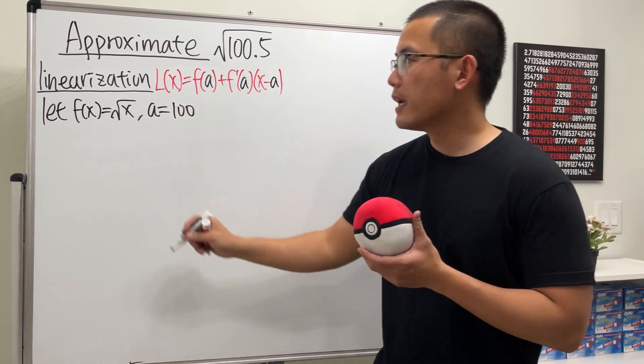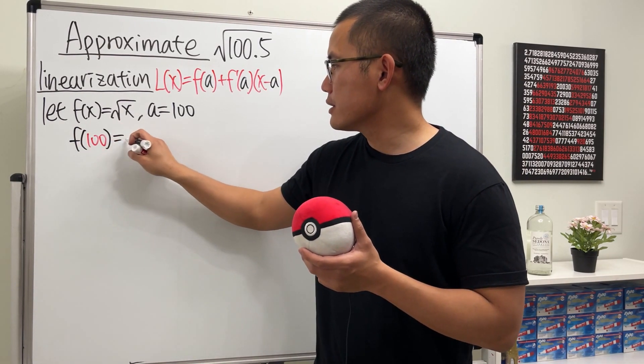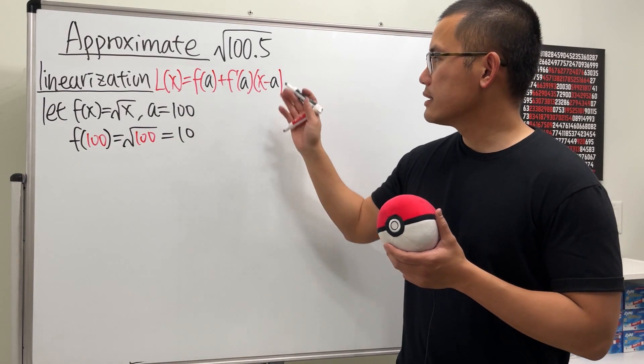And then let's get the linearization first. So f of 100, this right here is just square root of 100, and that's just equal to 10.